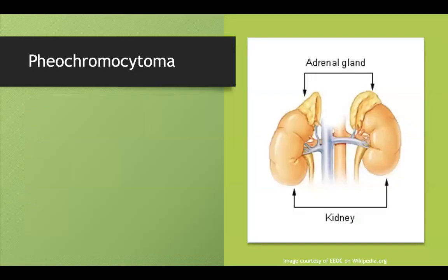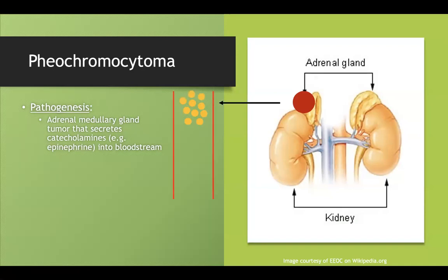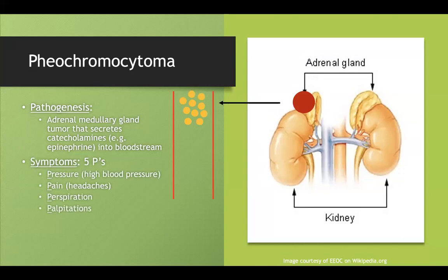A pheochromocytoma is an adrenal medullary tumor that can secrete catecholamines like epinephrine and norepinephrine directly into your bloodstream. This causes a variety of symptoms: high blood pressure, headaches, sweating, palpitations, and pallor. Because it doesn't secrete continuously, you're going to see paroxysmal symptoms — really bad symptoms for a bit, then they go away, then come back.